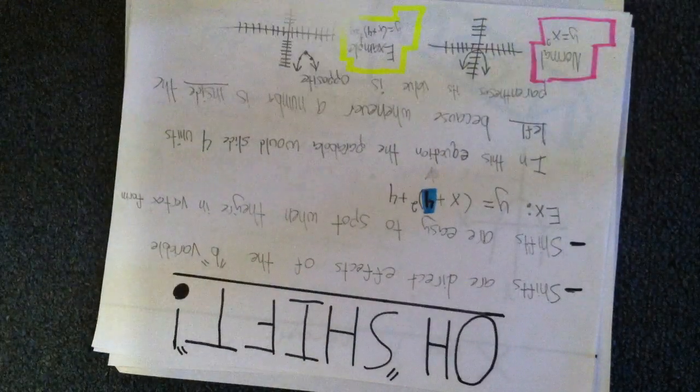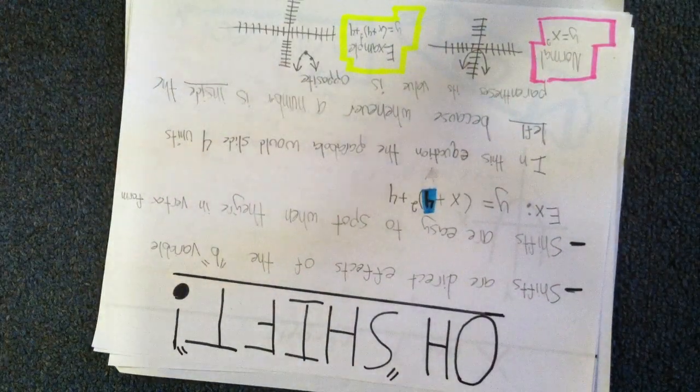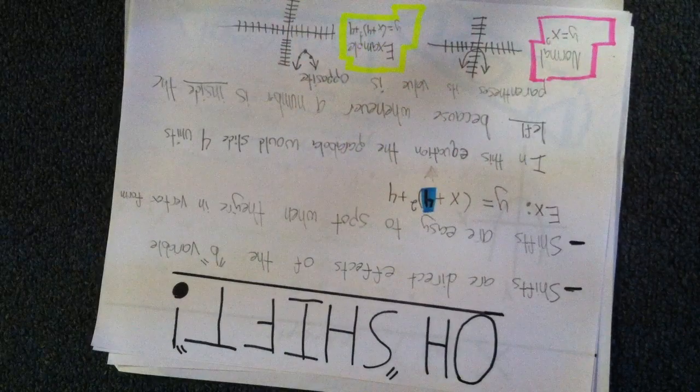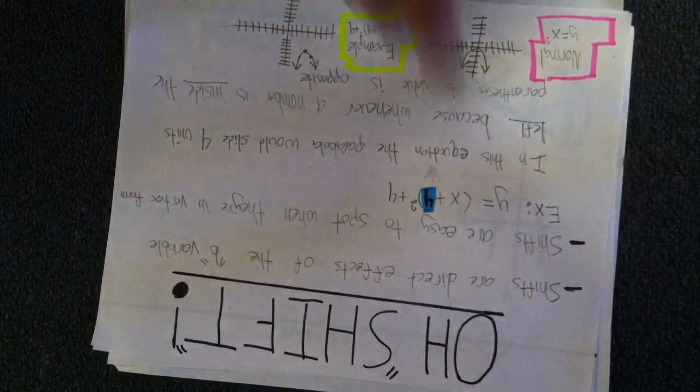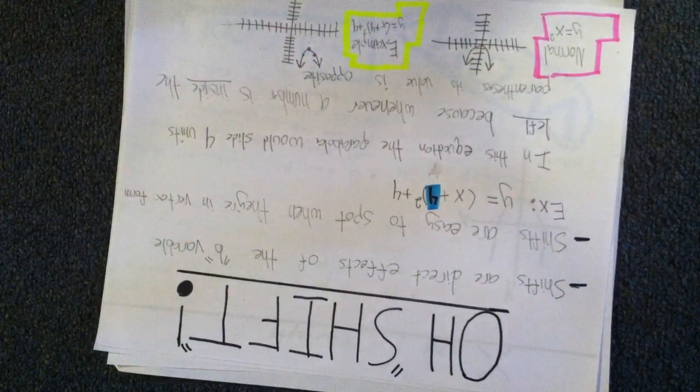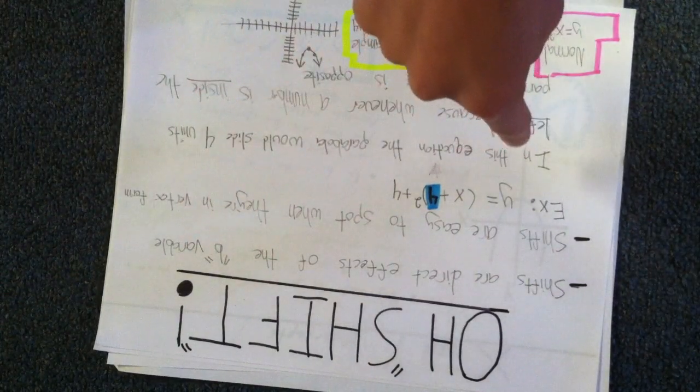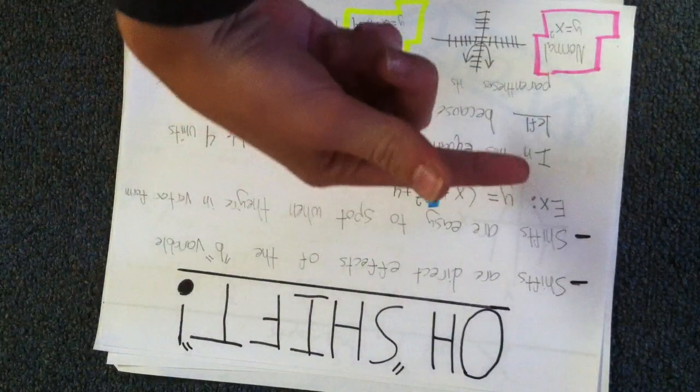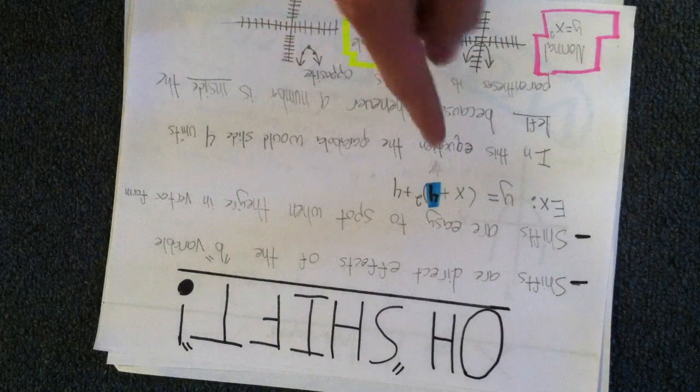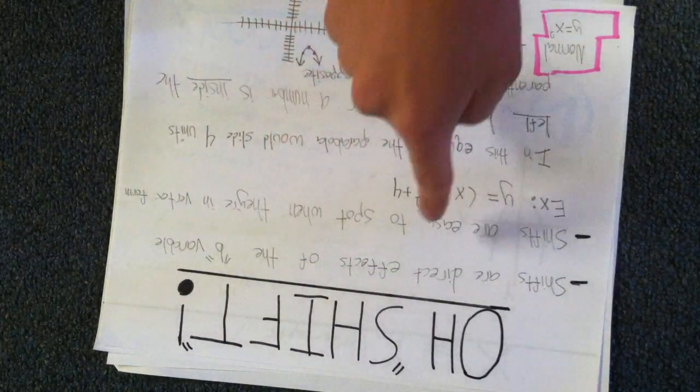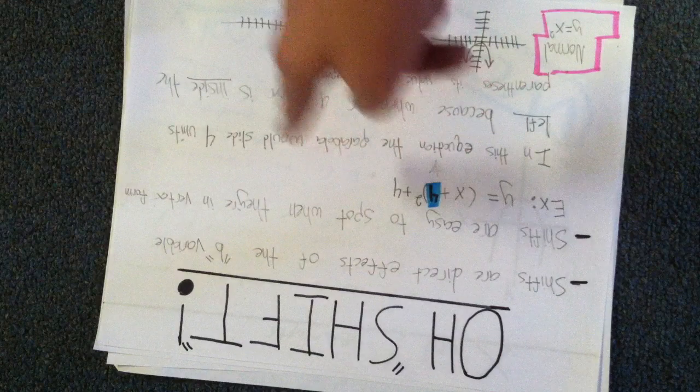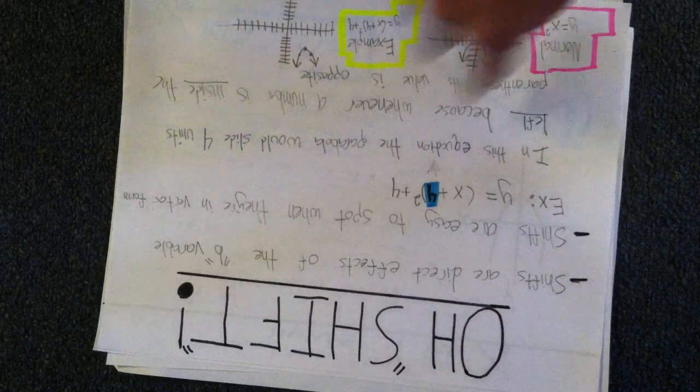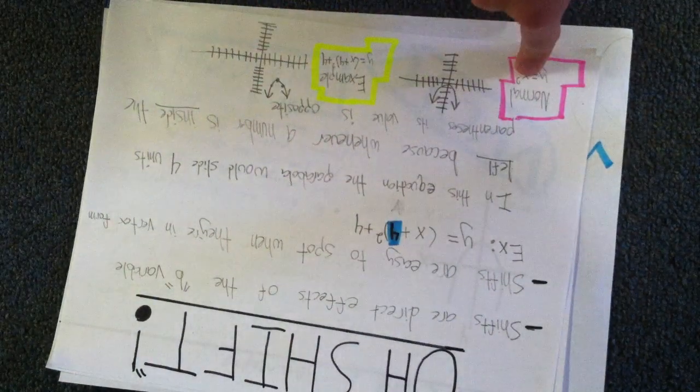Alright, good job. Oh, shift. Shifts are direct effects of the B variable. Shifts are easy to spot when they're in vertex form. Example right here: y equals x plus 4 squared plus 4. In this equation, the parabola would slide 4 units left because whenever a number is inside the parenthesis, its value is the opposite.